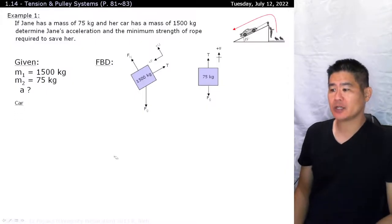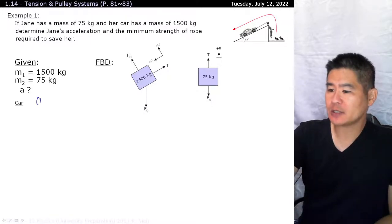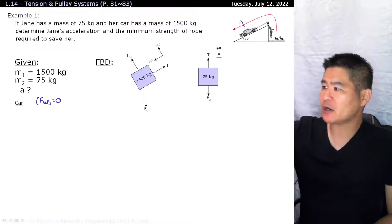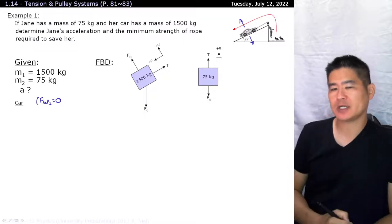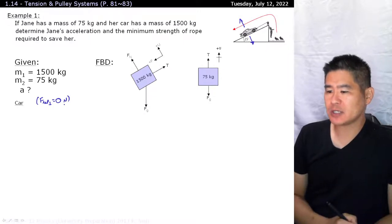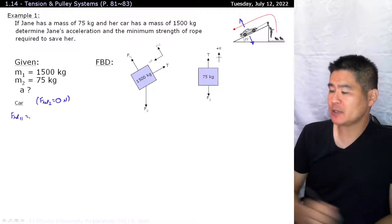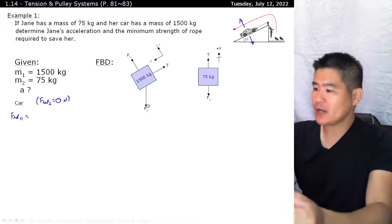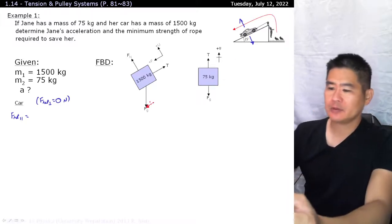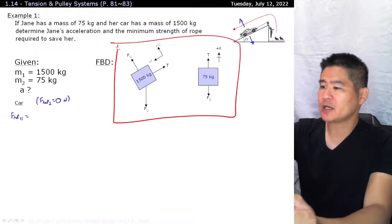Let's start off by doing the calculations for the car itself. Now, one thing I want to point out is that the F net in the perpendicular dimension is equal to zero. We're not expecting the car to float off into the sky, nor do we expect it to sink into the ramp itself. So F net perpendicular is equal to zero newtons.